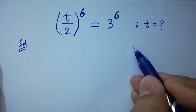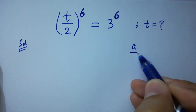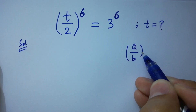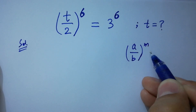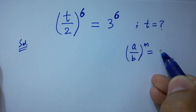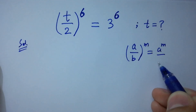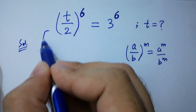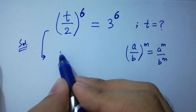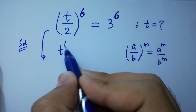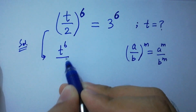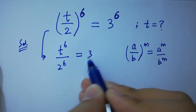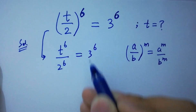As we know, (a/b)^m = a^m / b^m. Applying this rule, we get t^6 / 2^6 = 3^6.